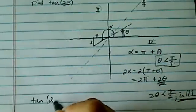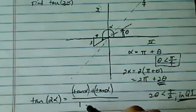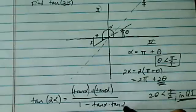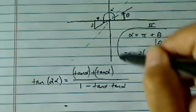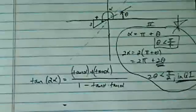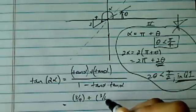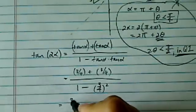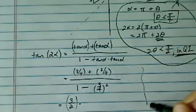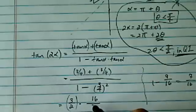Now let's go back to the easy part. Tangent of 2 alpha equals 2 times tangent of alpha over 1 minus tangent squared of alpha. I'm not going to go through the derivation here. Since 2 theta is in the first quadrant, there's no negative sign. Tangent of alpha is 3 over 4, so the numerator is 2 times 3 over 4, which is 3 over 2. The denominator is 1 minus 9 over 16, which is 7 over 16. Flipping and multiplying gives us 24 over 7.